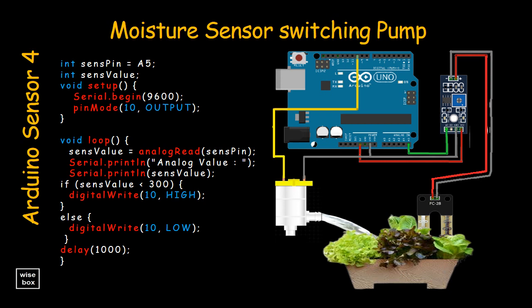As plant gets sufficient water and soil gets wet, then sensor senses enough moisture in soil. Thus, the water pump will automatically turn off and stop. This is what we call an automatic plant watering system, or an automatic irrigation system.